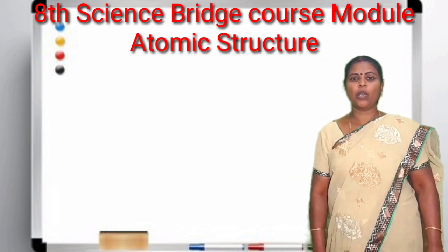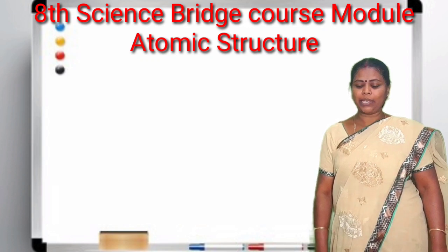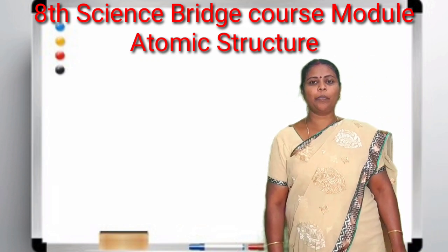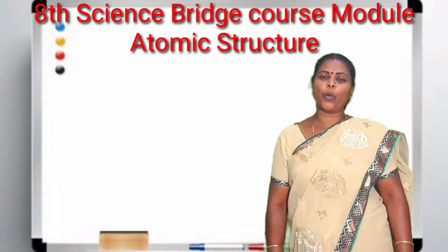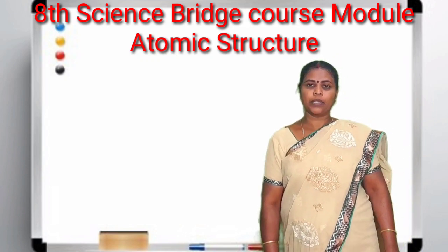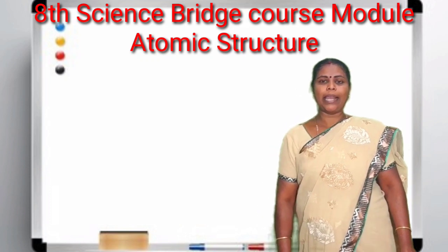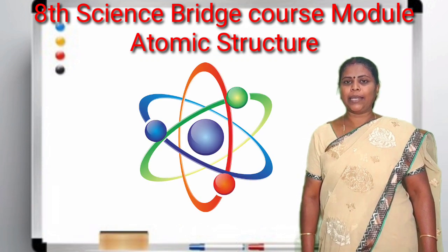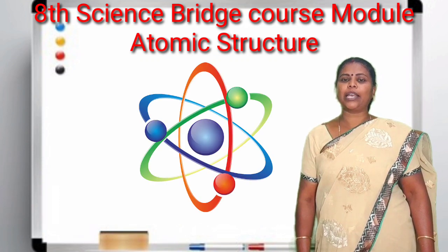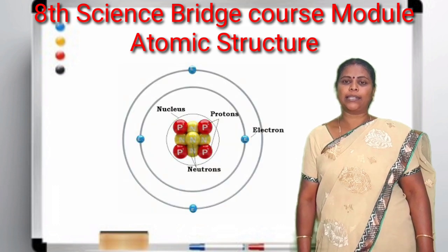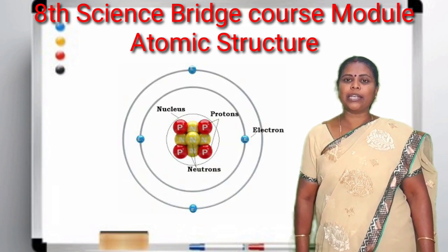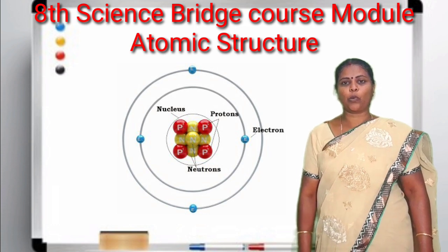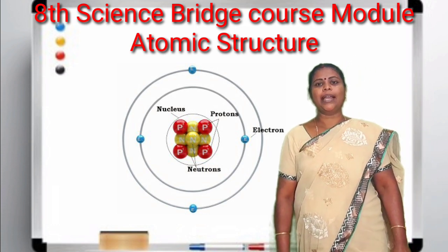First, what is an element? Elements are chemically simple substances which cannot be broken down through any chemical process. So the element is made up of a single type of atom. The atom has 3 different types of subatomic particles — the first one is proton, neutron, and electron.